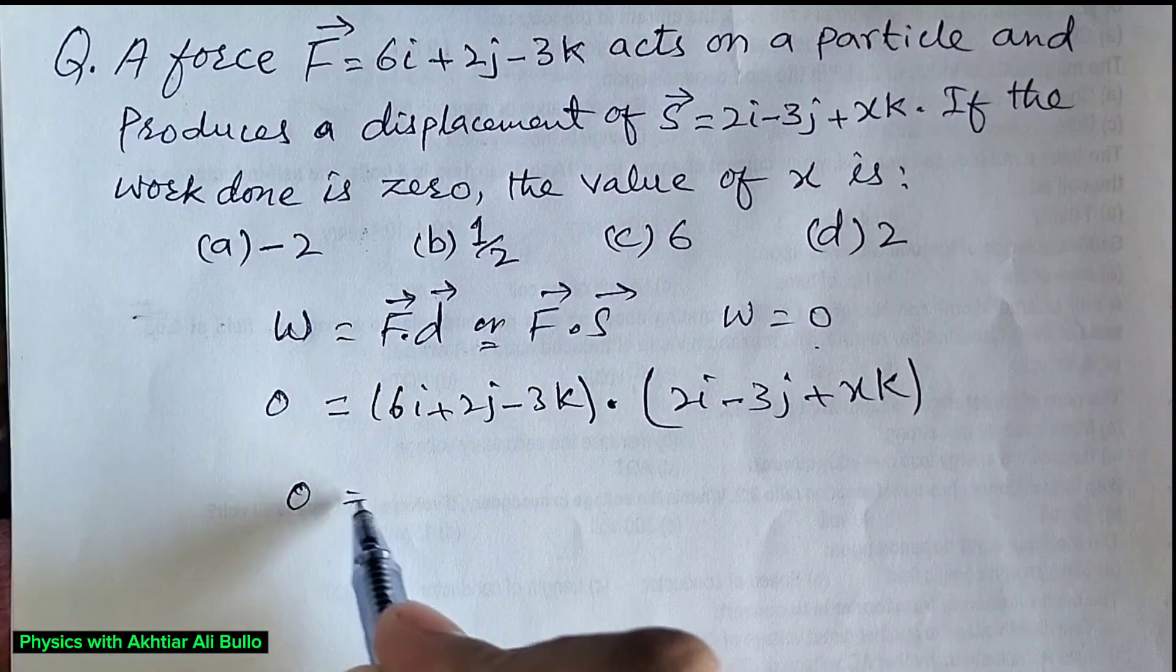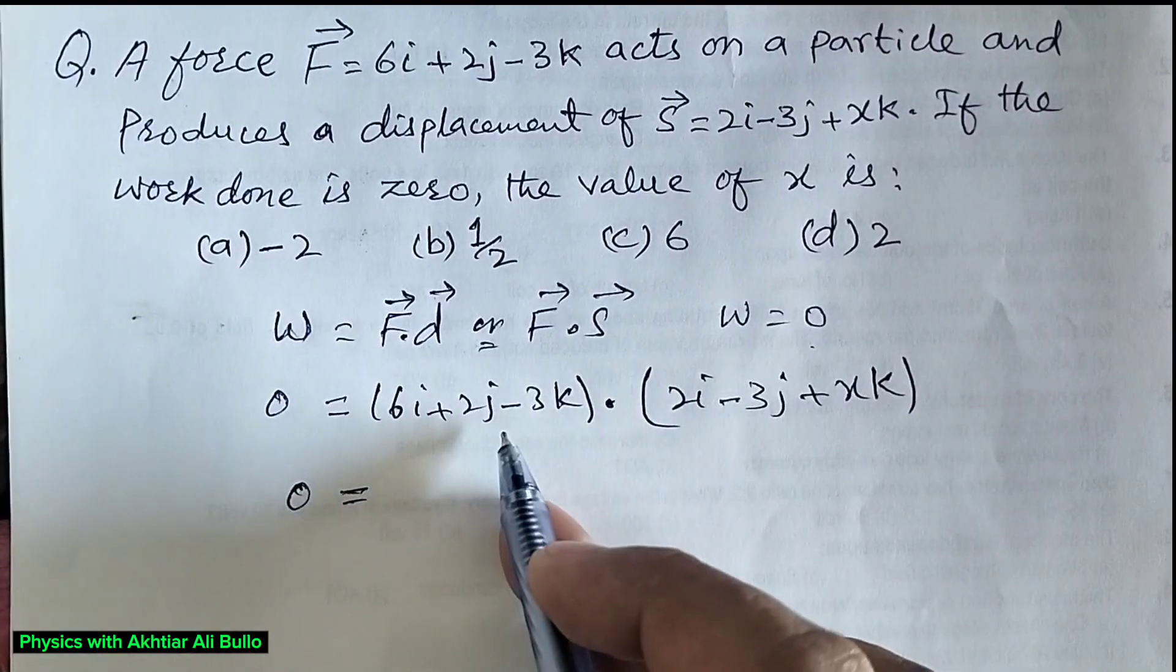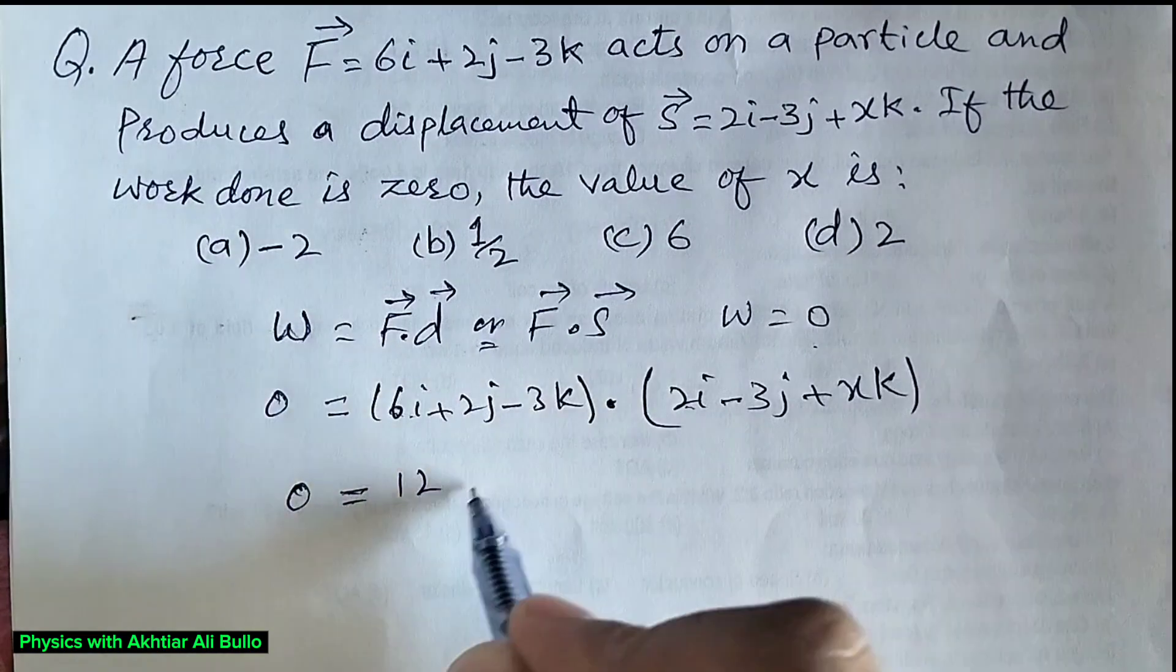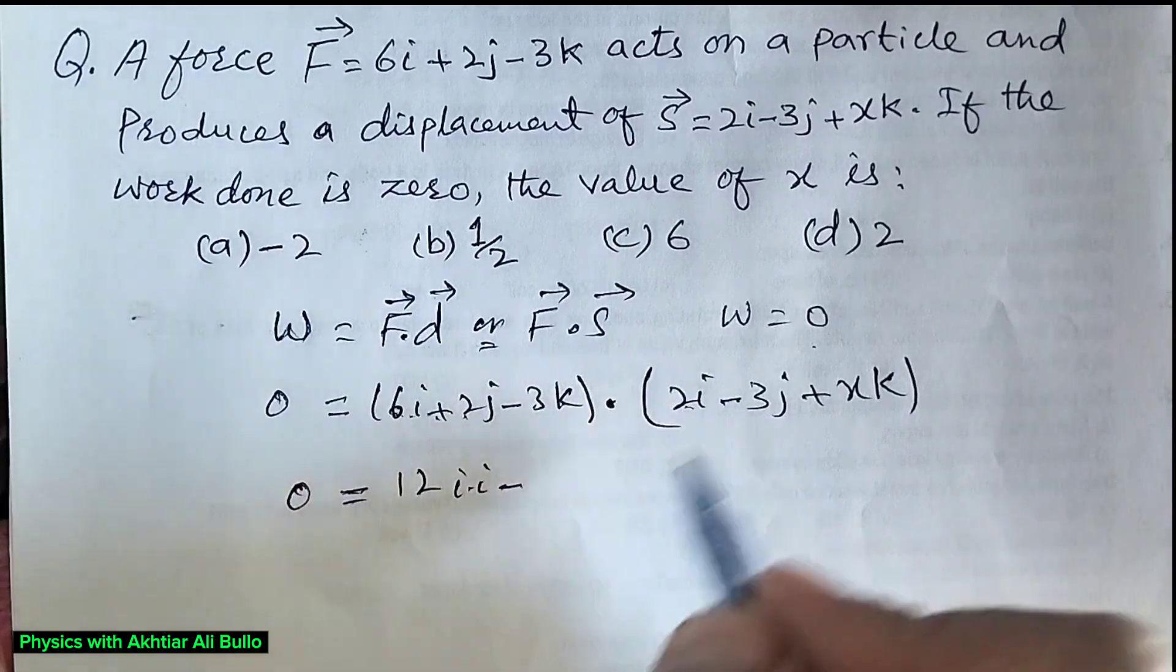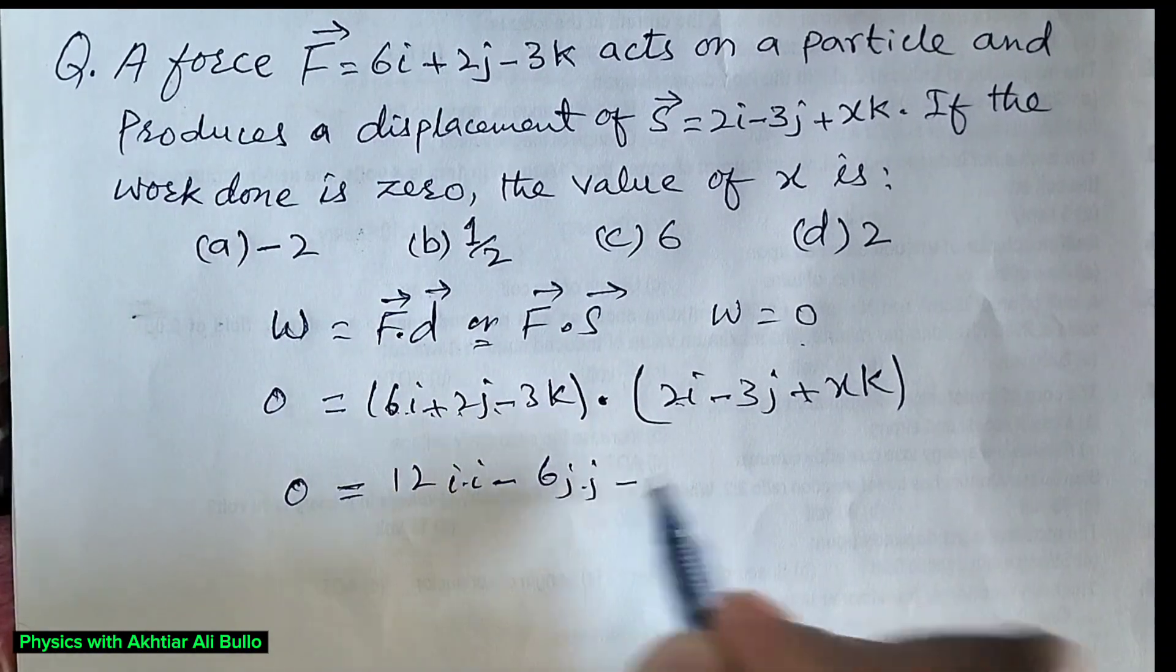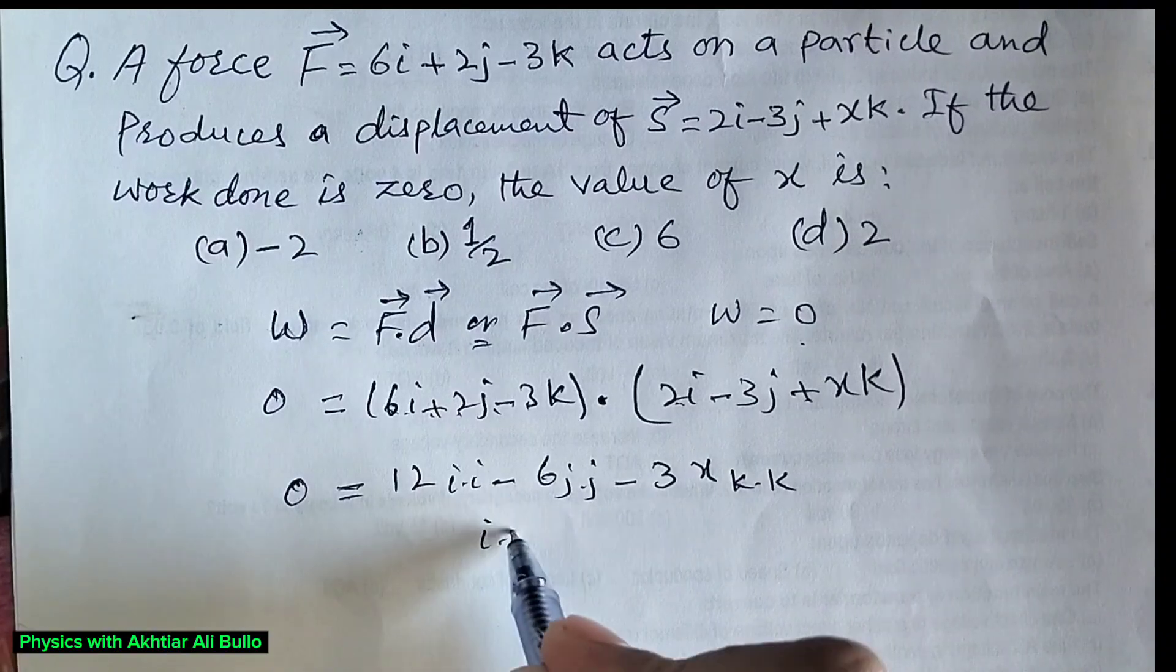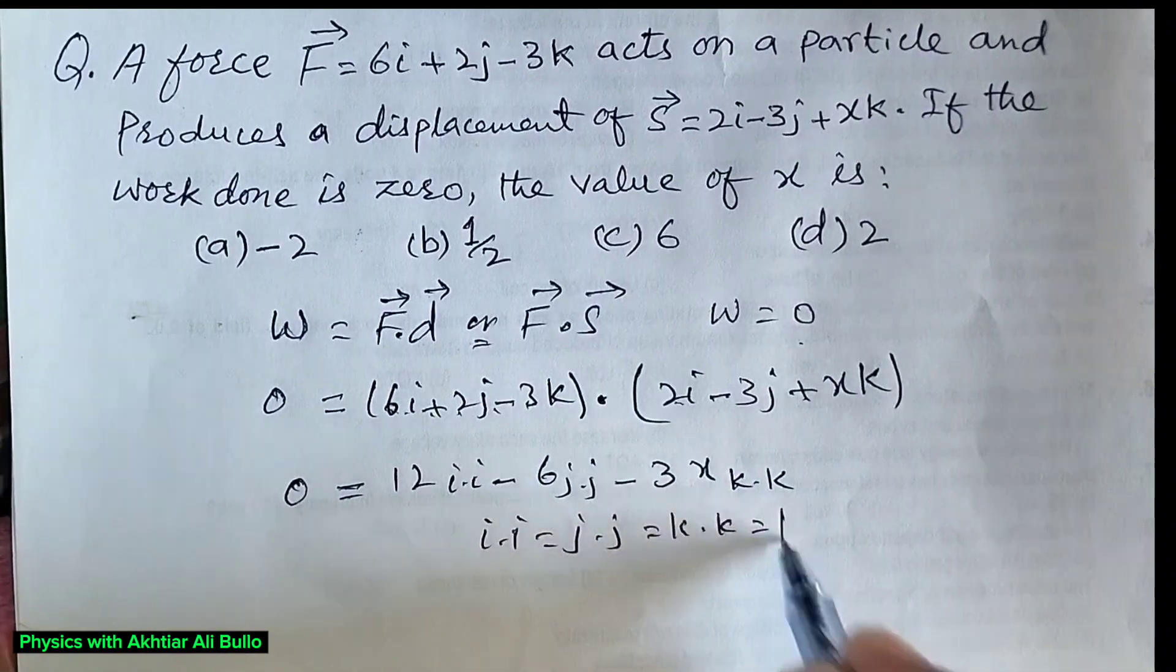So, 0 will be equal to... we will multiply the value of I with I, the value of J with J, and the value of K with K. So, 6 into 2 will be 12 I dot I, plus 2 into minus 3 will be minus 6 J dot J, minus 3 into X will be minus 3X K dot K. As we know that I dot I is equal to J dot J is equal to K dot K is equal to 1.